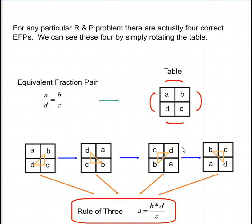If we are trying to find a, then we can use the rule of three. So here a is going to be equal to b times d divided by c. That is the values at each end of the hypotenuse multiplied together divided by the value at the right angle.